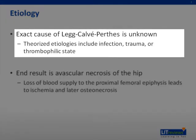The exact cause of Legg-Calvé-Perthes is not known. Multiple etiologies have been proposed, including infection, trauma, or a thrombophilic state. Abnormalities in clotting, such as a Factor V Leiden mutation or protein C/S deficiency, could play a role in increased clotting. The proposed theory is that increased clotting causes venous thrombosis, which in turn impedes arterial blood flow to the femoral epiphysis.